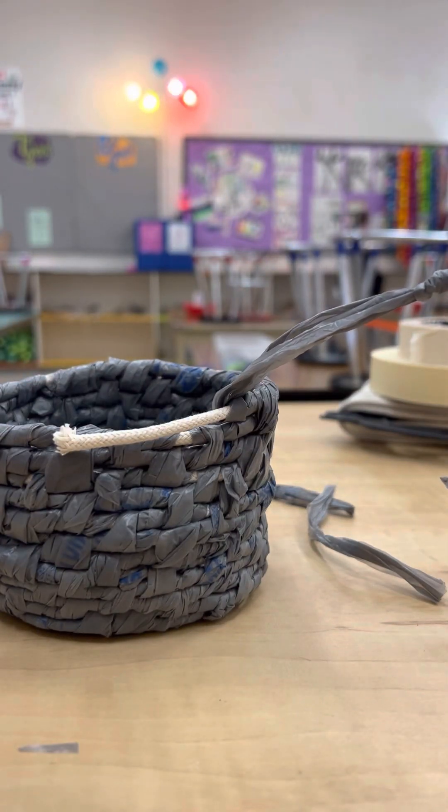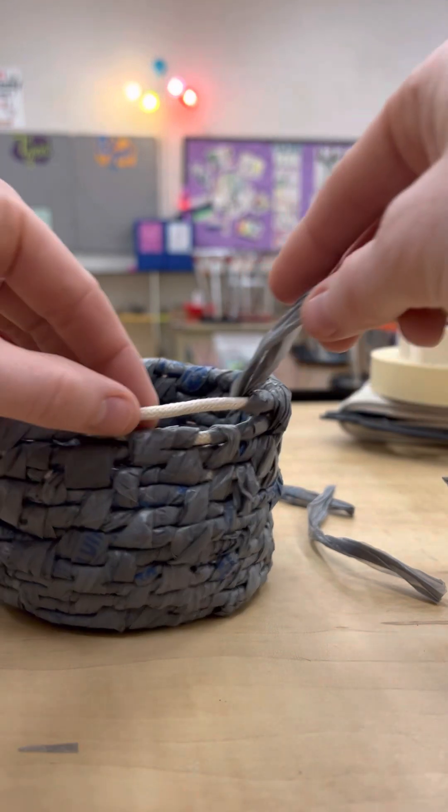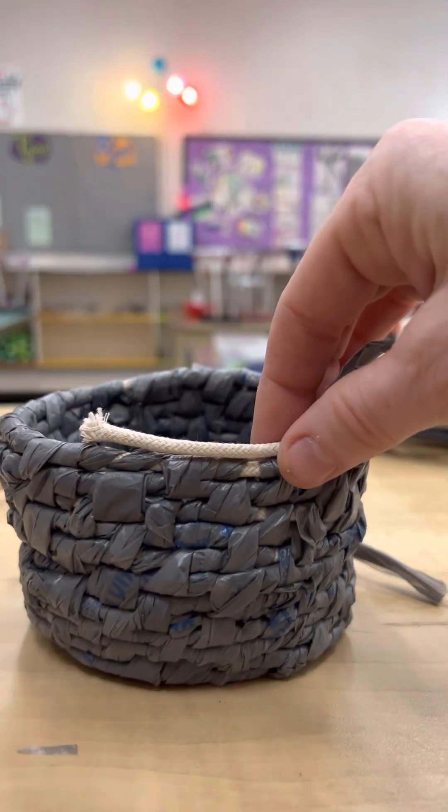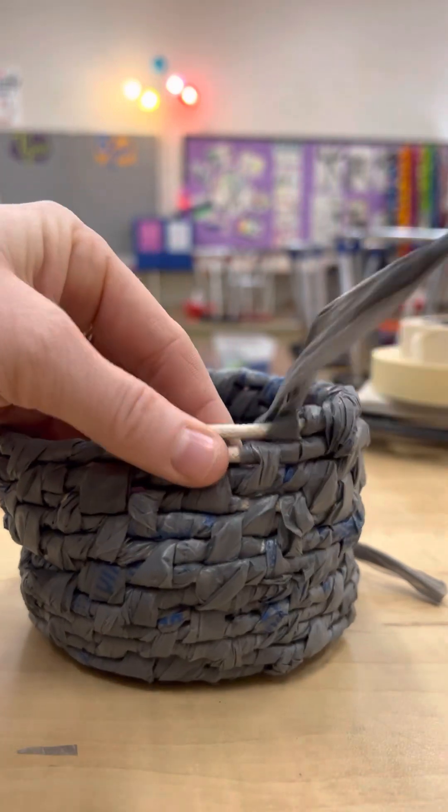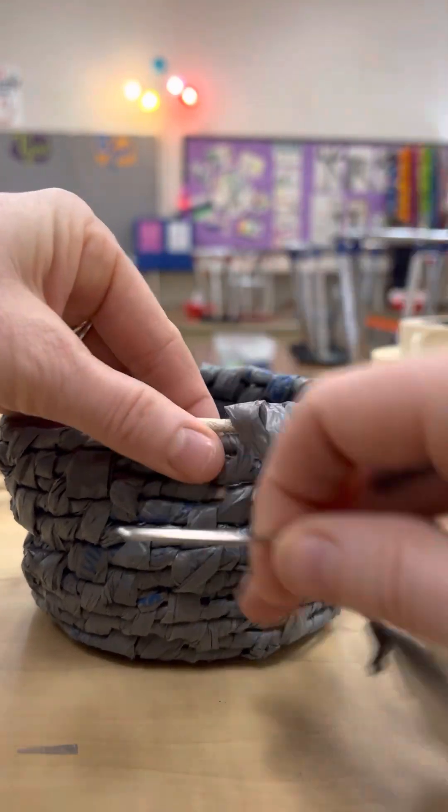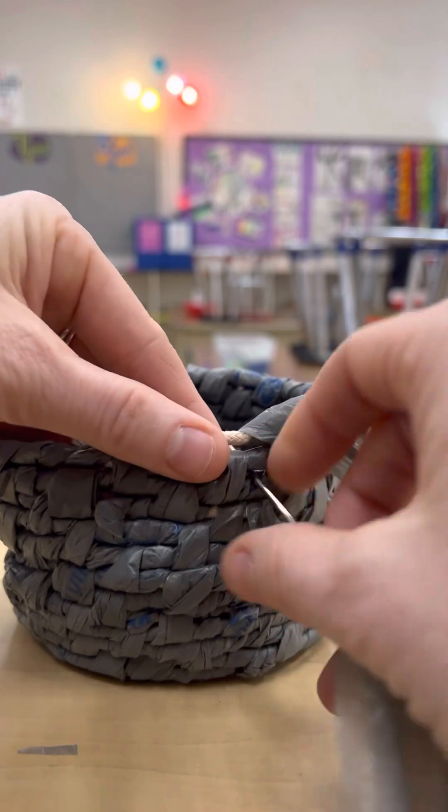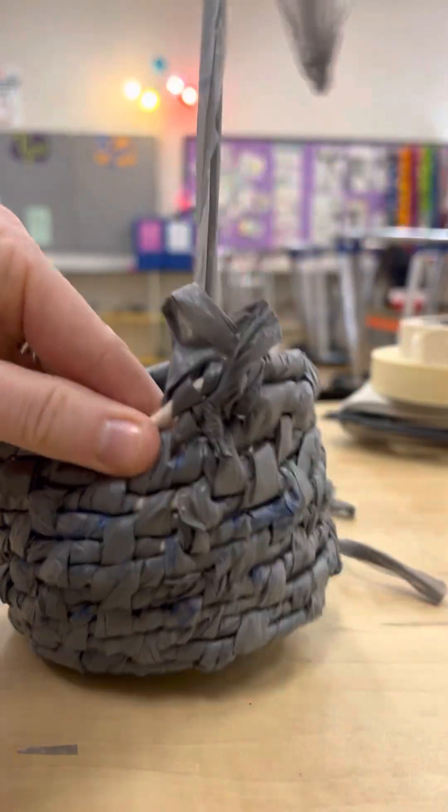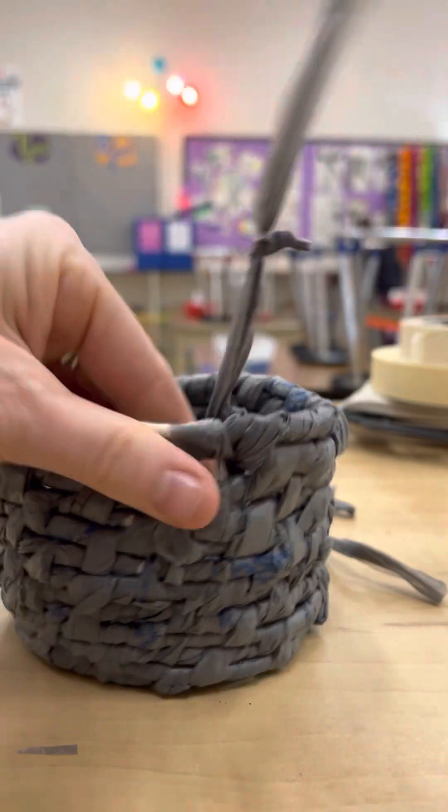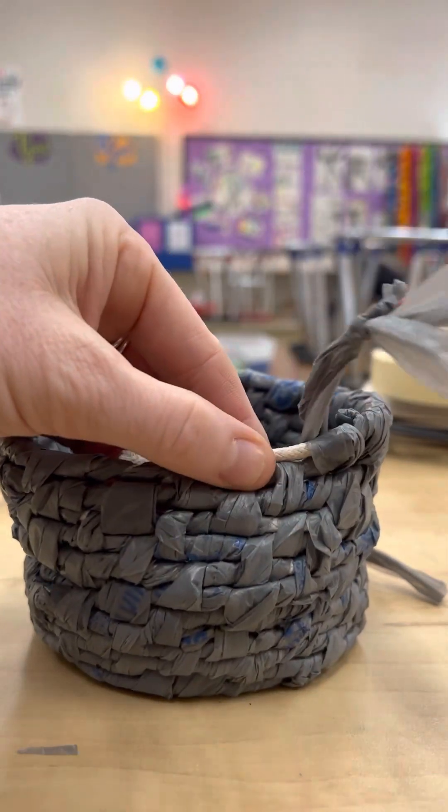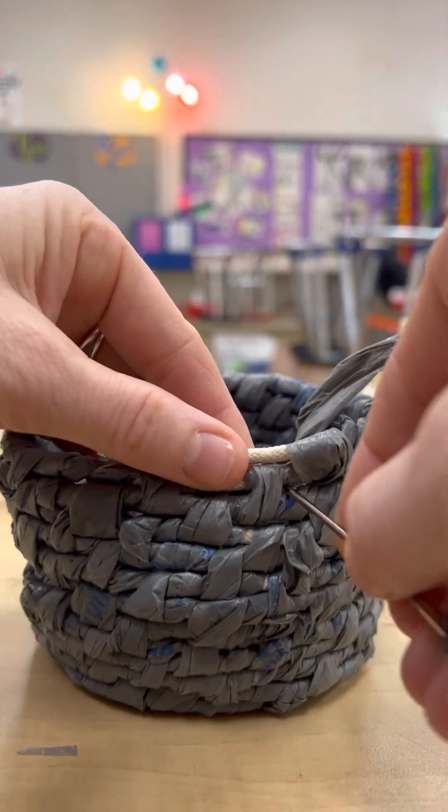Okay guys, so we're going to learn how to finish off our basket once you have reached the end of your rope. At this point, instead of wrapping four times and then attaching, you are just going to attach all the way down. So I just attach there.